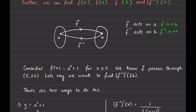Since 26 is the output of f, it will be the input for f inverse. We want to find the derivative of the inverse function at 26 — not at 5, because f inverse has to act on the output of the original function. For the original function I gave 5 as input, the function squared it and added 1 to give 26. So anytime an inverse function is involved, it has to do with the output of the original function, which is 26.